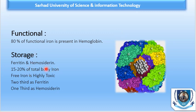Iron is stored in two forms: ferritin and hemosiderin. The storage pool contains 15 to 20 percent of total body iron. Free iron is highly toxic because it can result in tissue damage due to its capacity to form free radicals. We can see this type of problem in thalassemia as well, where a lot of iron moves freely and can be stored in different parts of the body.